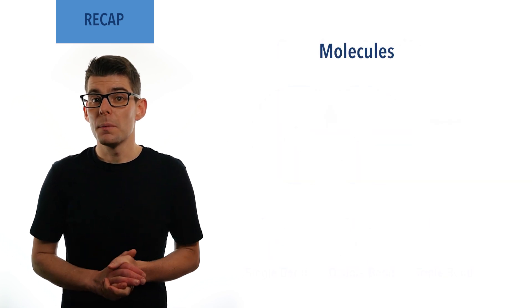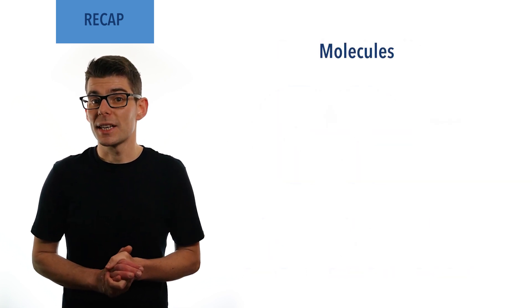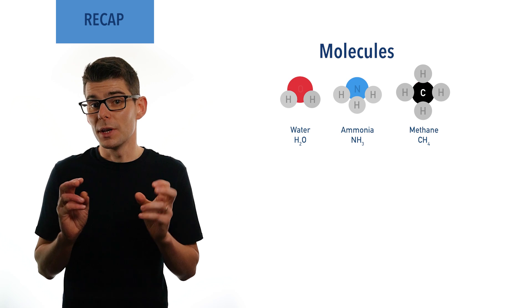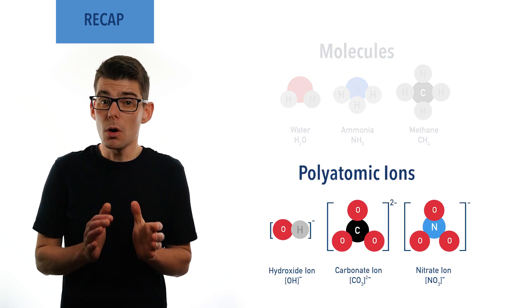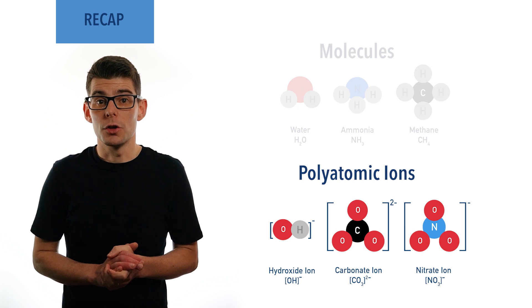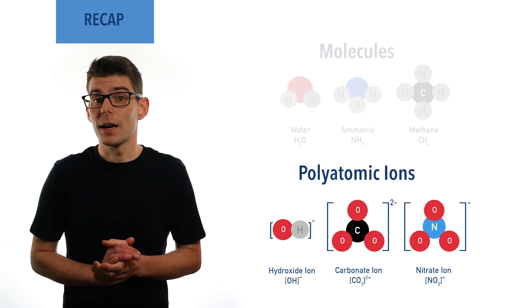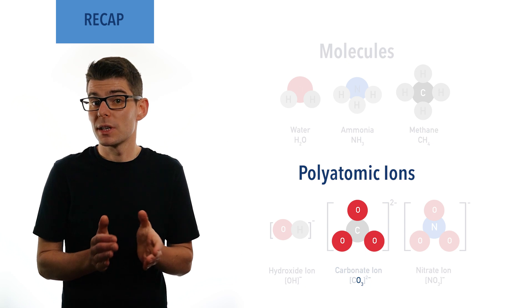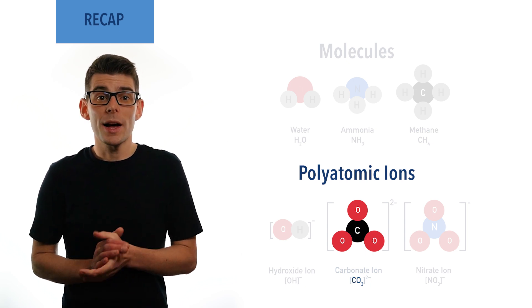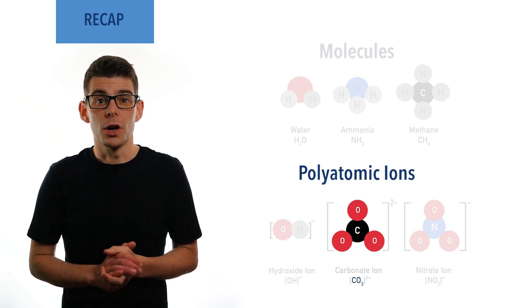A molecule is formed when atoms covalently bond together, forming groups or units. A polyatomic ion is usually a small molecule that has an overall charge. For example, a carbonate ion contains three oxygen atoms covalently bonded to a central carbon atom, and the four atoms share an overall charge of two minus.